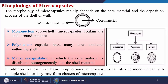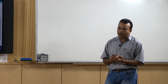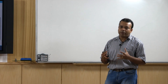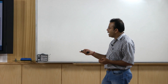By method, we can divide these into three different types. First is called mononuclear core-shell microcapsules, which contain the shell around a single core. Then polynuclear capsules have many cores enclosed within the shell. And matrix encapsulation, in which the core material is distributed homogeneously into the shell material. Based on this, we have mononuclear, polynuclear, and matrix types.